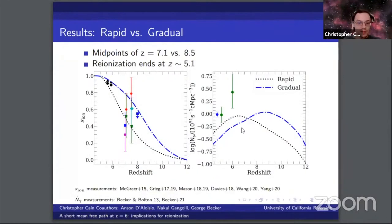Now onto our results. The first comparison we considered are two models of reionization. One in which reionization proceeds rapidly in its latter half with a midpoint of redshift 5.1, and our gradual model, which has a midpoint of redshift 8.5 and proceeds more gradually in the latter half.